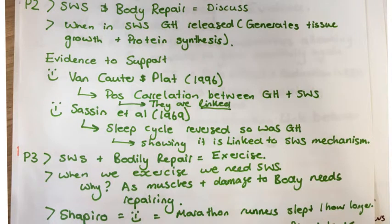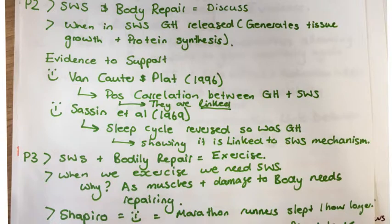When we're in slow-wave sleep, growth hormone is generally released, and this then helps with tissue regeneration as well as protein synthesis. The evidence to support this is Van Cauter and Platt and Sassin et al. Van Cauter and Platt found that there was a positive correlation between growth hormone and slow-wave sleep, showing they are linked to one another. Sassin et al. found that when the sleep cycle reversed, growth hormone was reversed as well, showing that slow-wave sleep and growth hormone are inextricably linked.